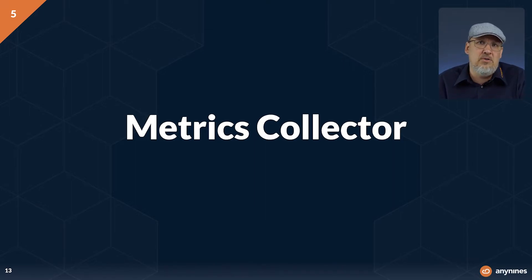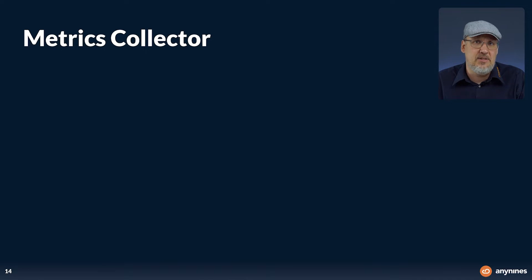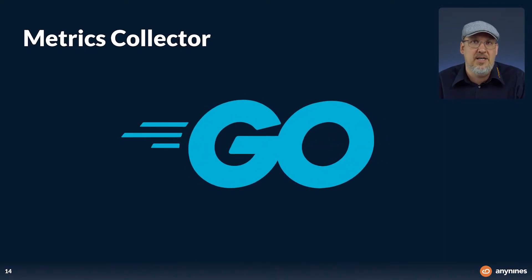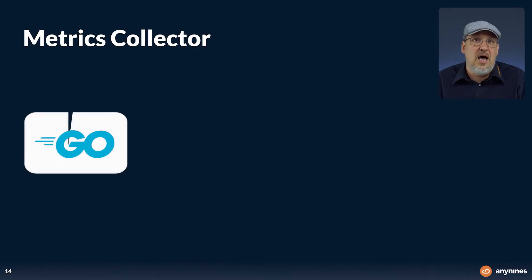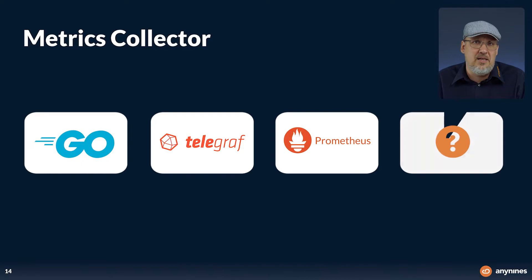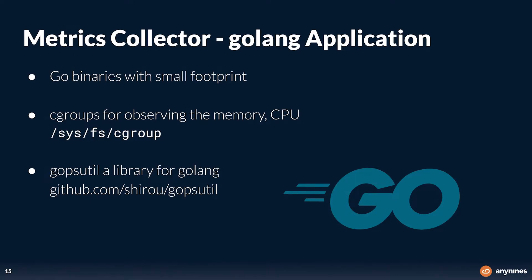After some research, I found several possible solutions. A small Go application could be a good choice. A Golang app would have a small footprint and you can quite easily access system resources. Linux containers rely on control groups (cgroups), which expose metrics like memory, CPU, and others. Control groups are exposed through a pseudo file system found under sys/fs/cgroup. Under that directory you see multiple sub-directories, each corresponding to a different cgroup hierarchy.